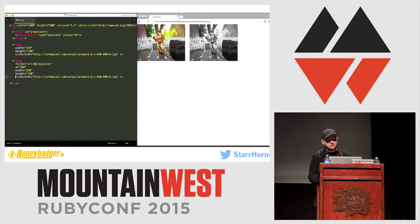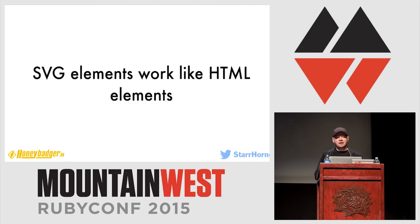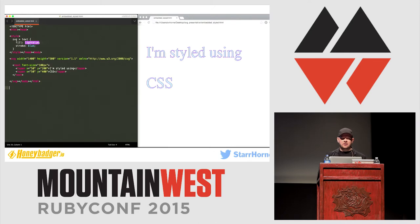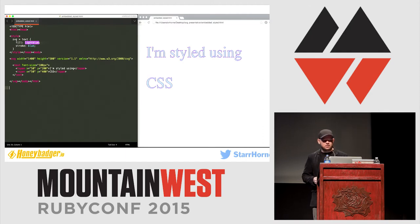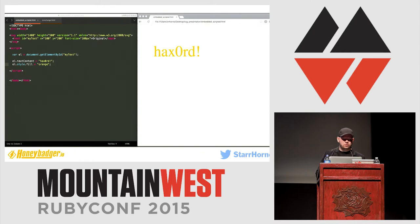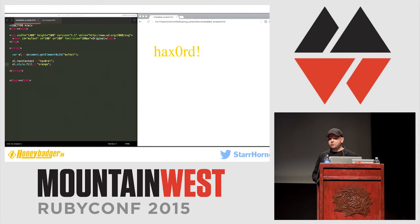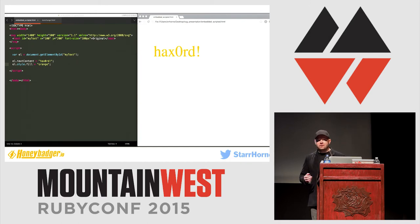The cool thing is, if you're in the browser, SVG works a lot like HTML. You can use your same old bag of tricks. You can give SVG elements an ID, give them classes, and then use CSS selectors to style them. You can use document.getElementById, or even jQuery, to get a reference to an SVG element. And then you can change the text, change the font — you can really do a lot of stuff.